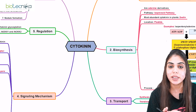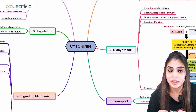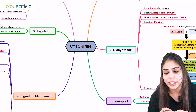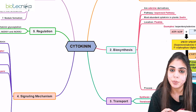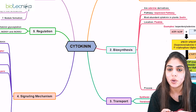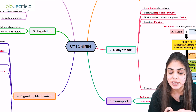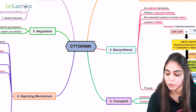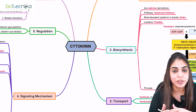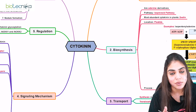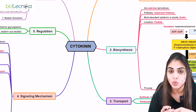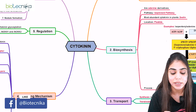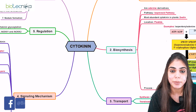In summary, cytokinin phytohormone is derived from purine nucleotide via the isoprenoid pathway, taking place in the plastid and requiring the 5-carbon precursor DMAPP. It is transported by xylem via acropetal transport. Its regulation involves two mechanisms: inactivation by glycosylation and cleavage by specific oxidases. We also covered its signaling mechanism and functional profile.